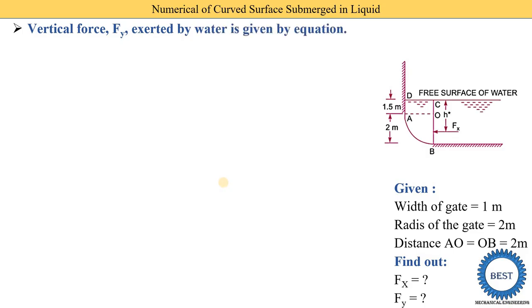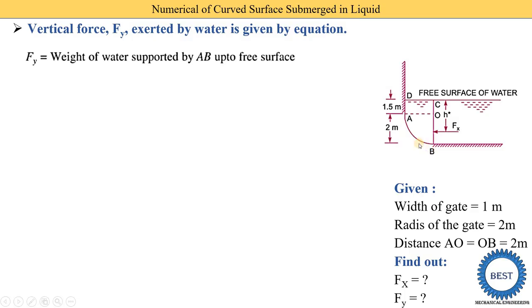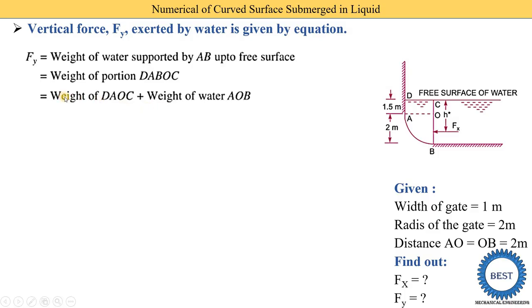Now we find the vertical force Fy exerted by water. Fy is the weight of water supported by the curved surface AB up to the free surface. We find the weight of the portion DABOC. This total area is divided into two parts: the rectangular portion DAOC and the curved portion AOB. So Fy equals the weight of DAOC plus the weight of AOB, where weight equals rho × g × volume.